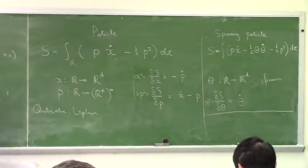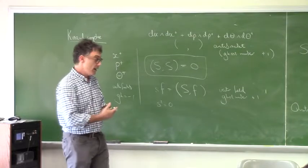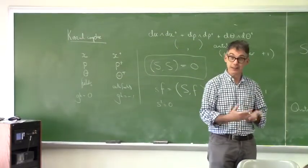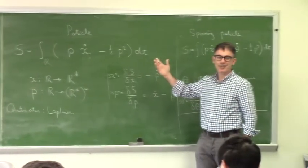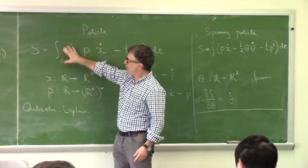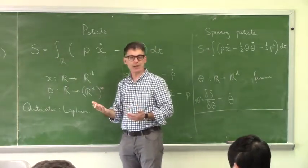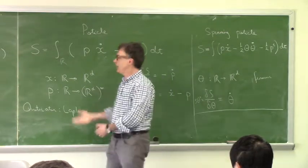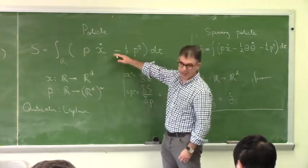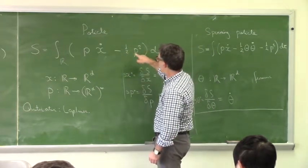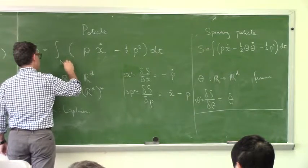So I want to study the following problem, which is modeled on things which were done in string and superstring theory. Namely, to couple to a background gravitational field, or supergravity. If you like, to restore general covariance. This is the motivation. You want this model to be manifestly invariant under a reparametrization of the real line.